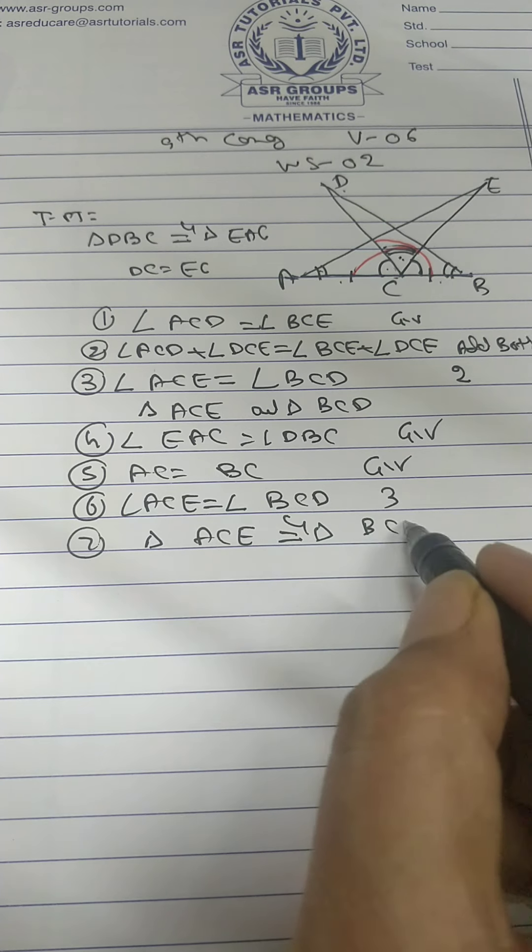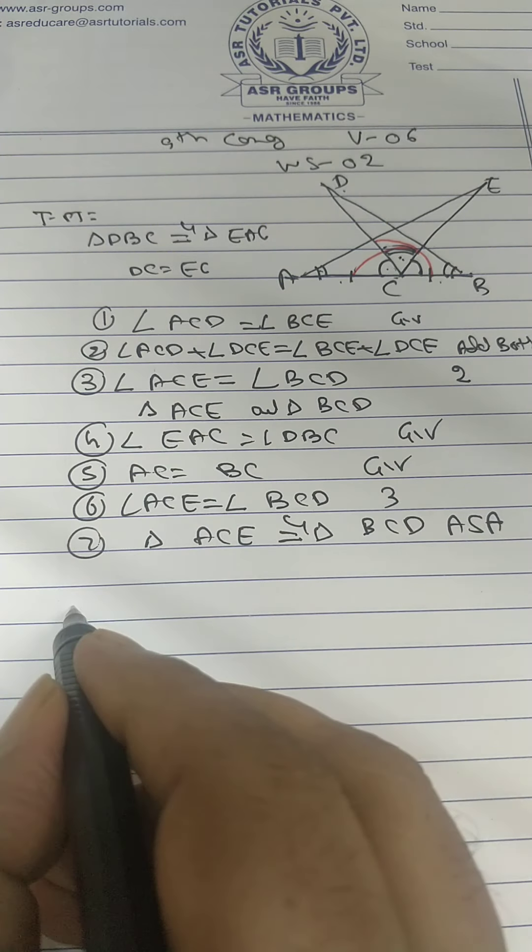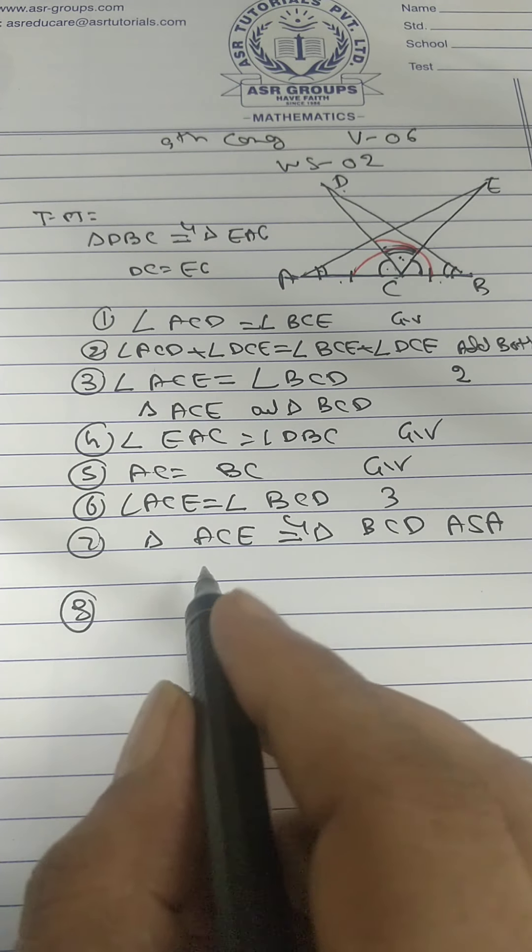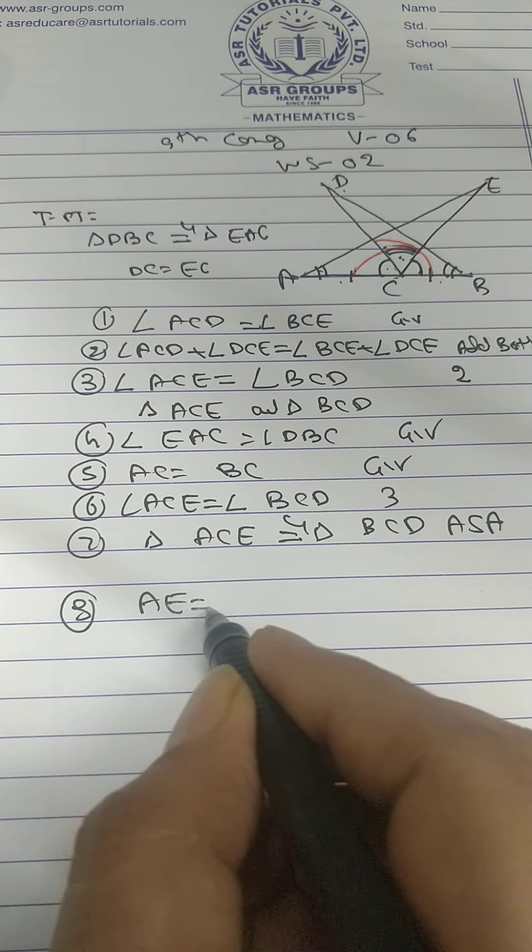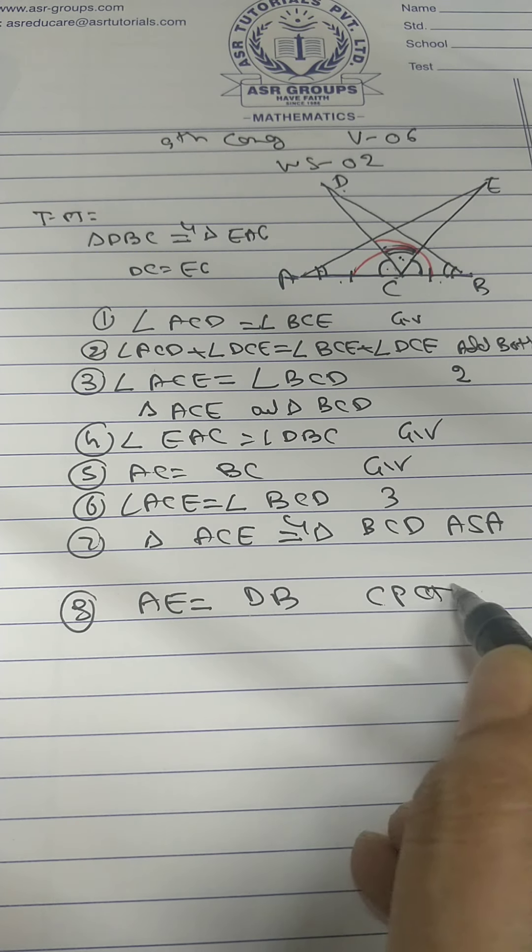Therefore triangle ACE is congruent BCD by ASA. Angle AC is congruent. Triangles congruent. Therefore AE equal DB, and DC equal EC, CPCT.